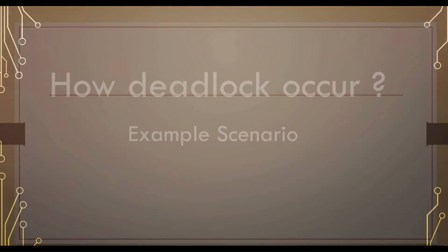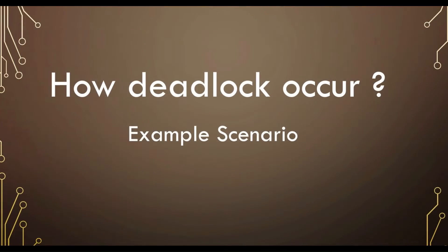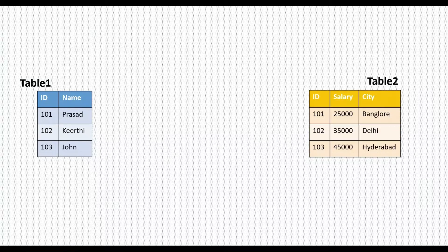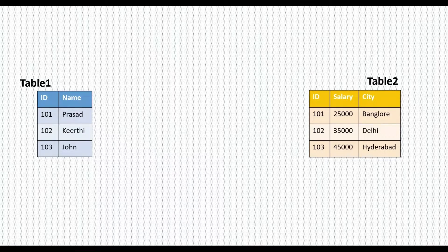How does a deadlock occur? We will see an example scenario using a pictorial presentation. Let's say we have two tables — table1 and table2 — with employee details in table1 and employee salary and address in table2.